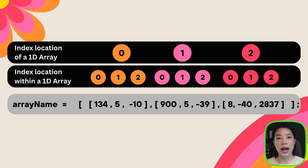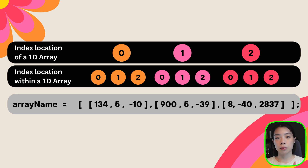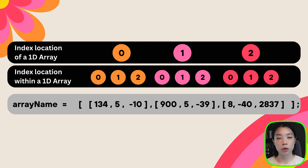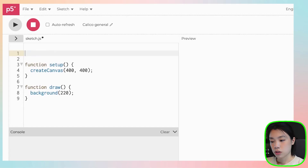In order for us to access values within a 2D array, you need not only one but two index numbers. The first index number is the index of the inner array, and the second index number is the index of the position that value is being stored inside the inner array.